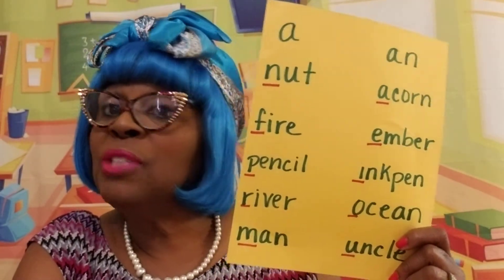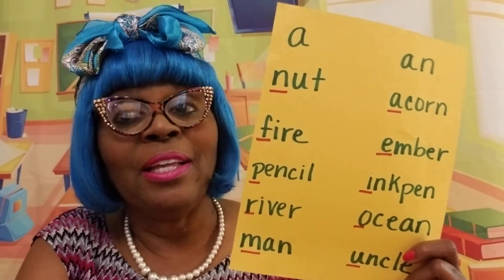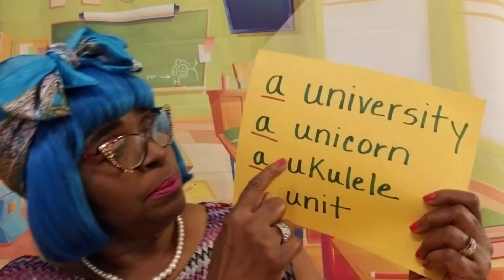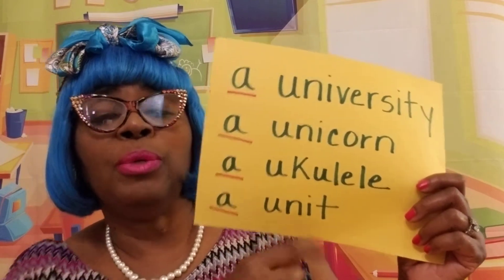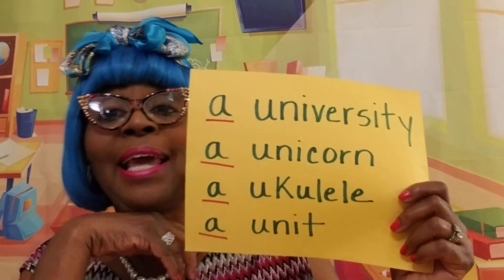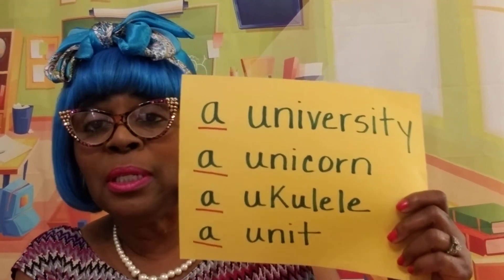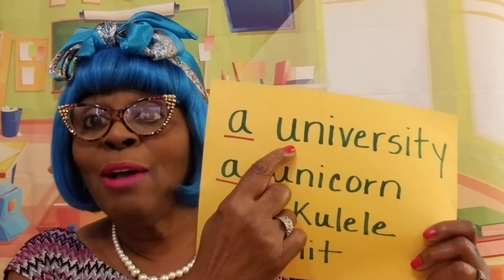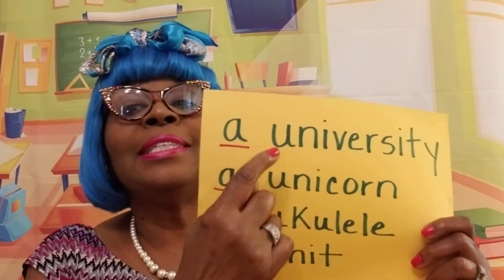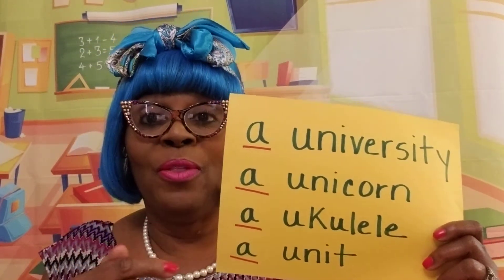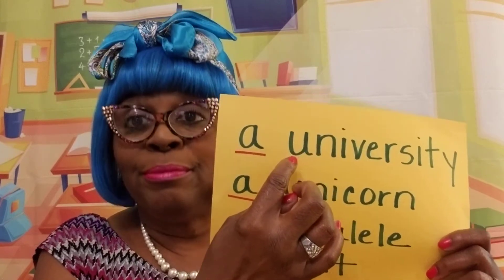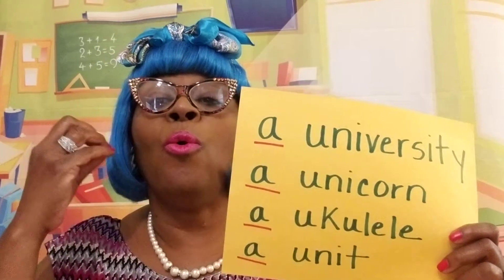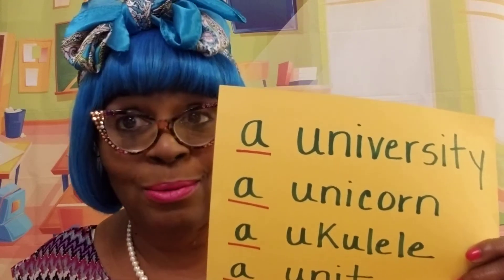Now, this rule is really good for thousands of words in the English language. But then there comes a time when you read words like university, unicorn, ukulele, unit. You wouldn't say an university. And you say, but Nona, U is a vowel. And vowels should begin with an, right? Well, we're not necessarily focusing in on the letter. We're focusing on the sound that it makes.